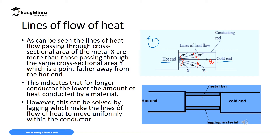Now, if we want to minimize this heat loss to the environment, look at the second diagram. We will introduce what we call a lag or an insulator — an insulating material, or lagging material, on this conductor. So on the surface of the conductor, when the heat wants to escape, it will encounter the insulator and continue to move within the conductor. All seven lines of heat flow will now travel from the hot end to the cold end. There will be no wastage of heat through diverging lines. The function of the lag is to maintain the lines of heat flow within the conductor without allowing them to escape to the environment.